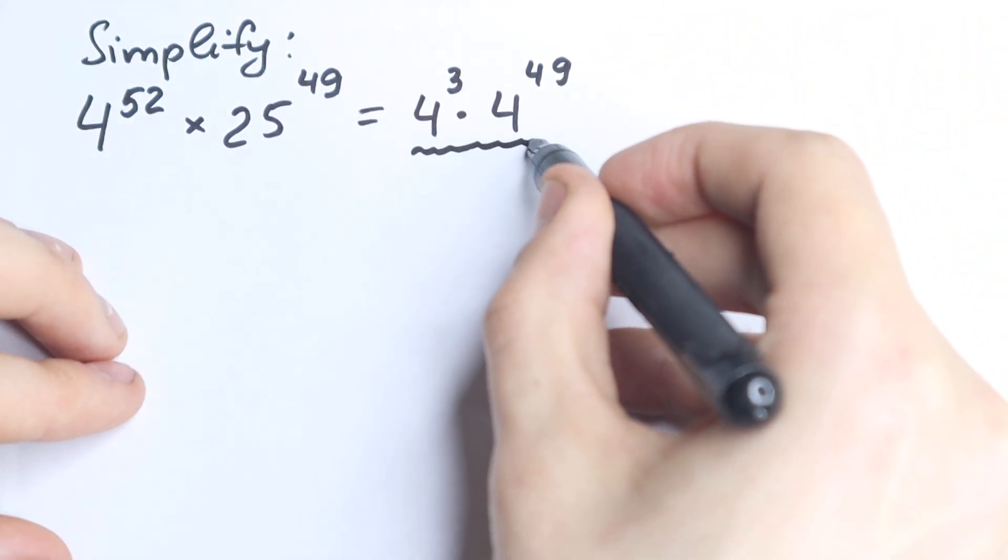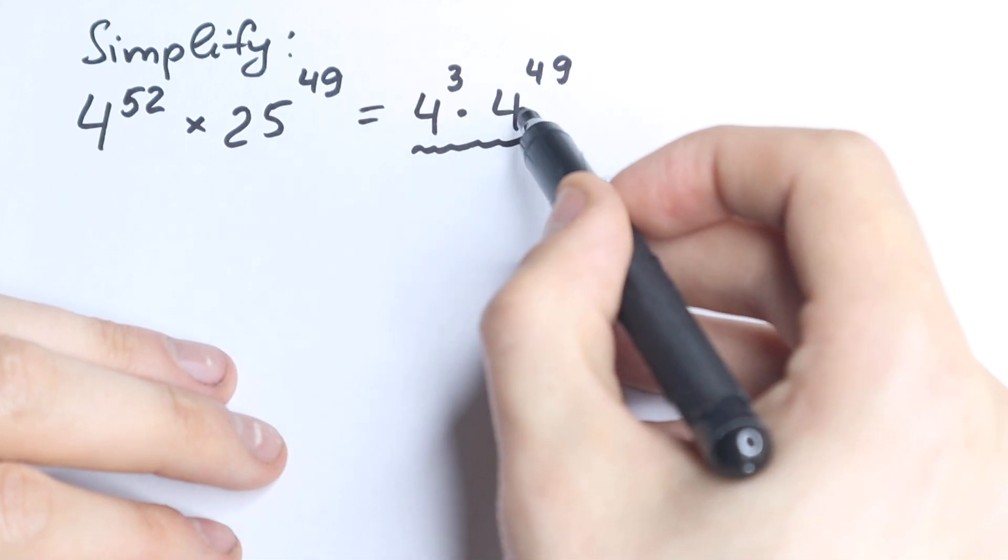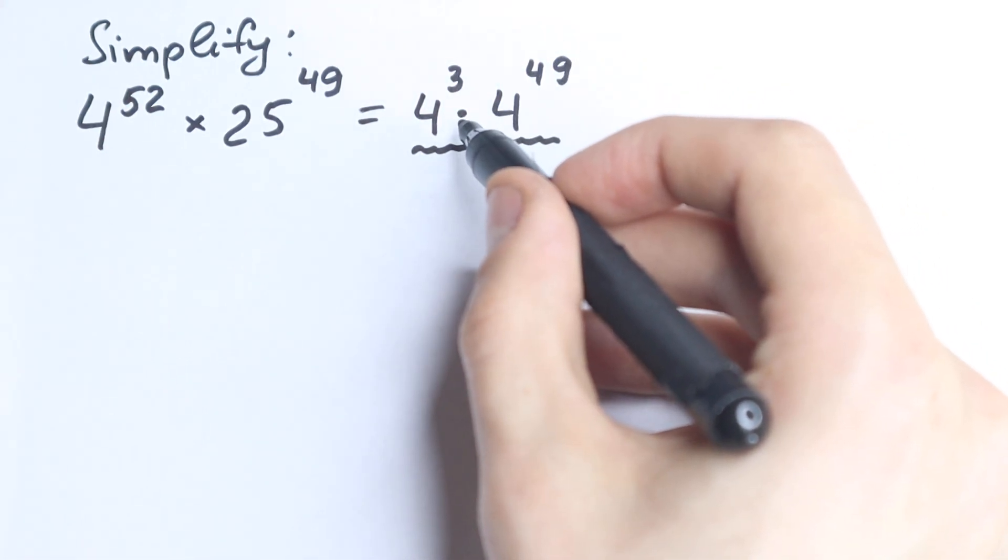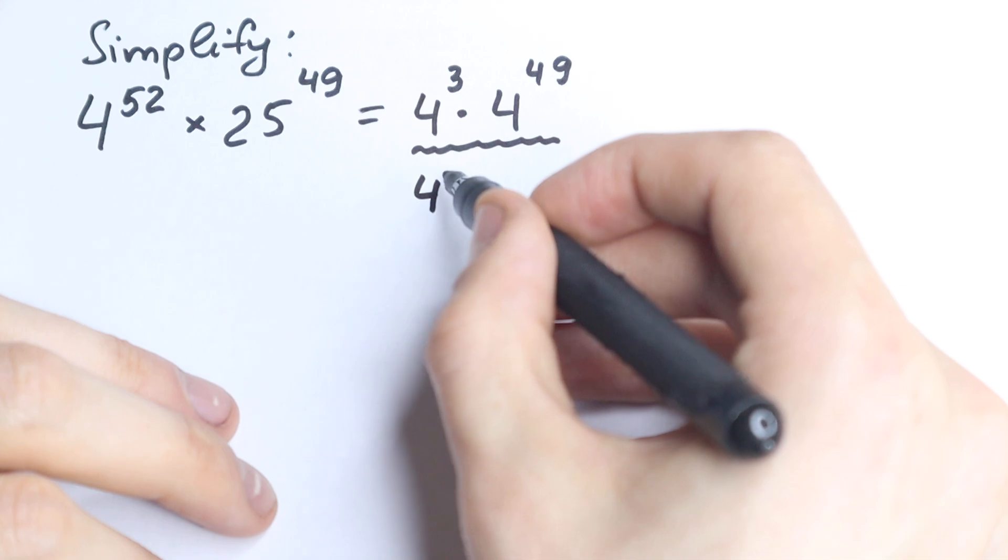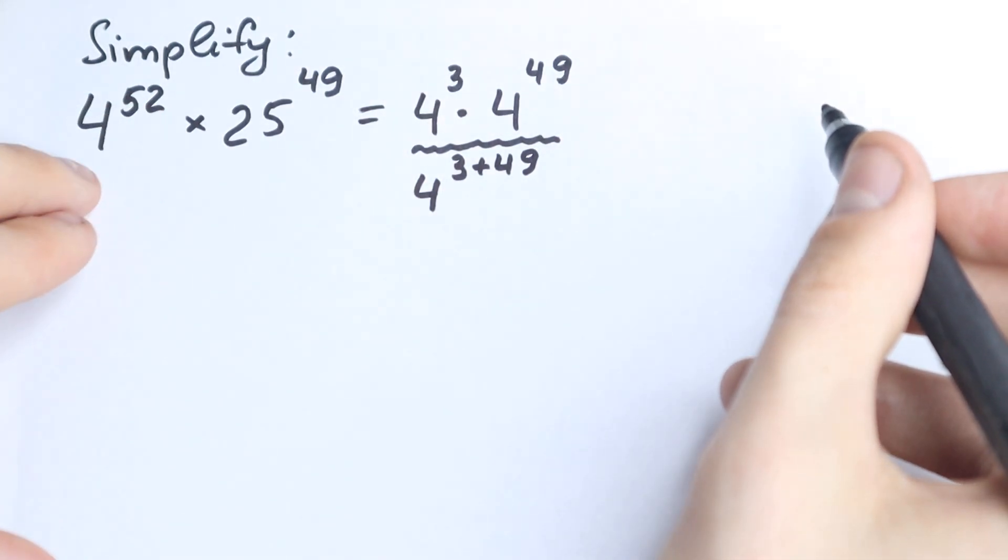Why do I write this? Because this is a great property. When you have a product with the same base and different powers, you add the exponents. So if you have 4 to the power 3 plus 49, this is our property, this is our answer.